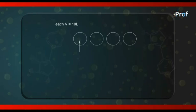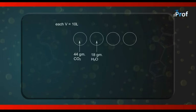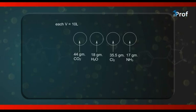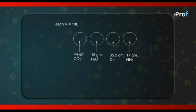Suppose we have four vessels, each with a volume of 10 liters. In the first vessel, I put 44 grams of carbon dioxide; in the second vessel, 18 grams of water vapor; in the third vessel, 35.5 grams of chlorine gas; and in the fourth vessel, 17 grams of ammonia. The question is: which vessel has the least active mass — that is, the minimum molar concentration?